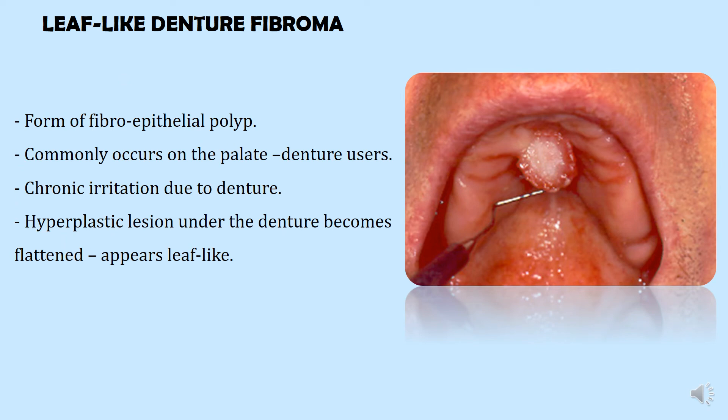If a fibroepithelial polyp occurs under a denture-bearing area — commonly on the palate of a denture user — it presents as a leaf-like fibroepithelial polyp, also called a leaf-like denture fibroma. This is again due to chronic irritation from the denture. It is a hyperplastic lesion showing no malignant transformation and is caused by trauma and irritation.